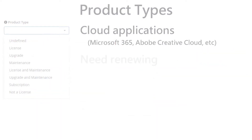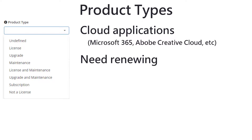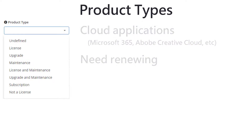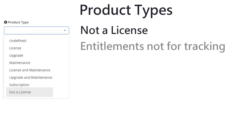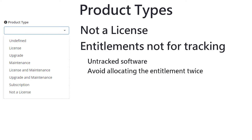Subscriptions are valid only for the duration of the subscription. The final option is not a license, which is provided to enable you to record transactions that do not correspond to an entitlement that you want to track. There could be a number of reasons for this. For example, you may have software installed on computers where you can't track the usage and so you don't want to track the matching entitlement. If you record the entitlement but don't see a usage, you could inadvertently allocate the entitlement to a second liability, which would be wrong.